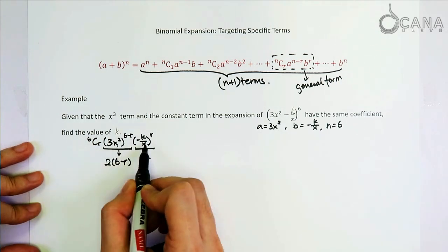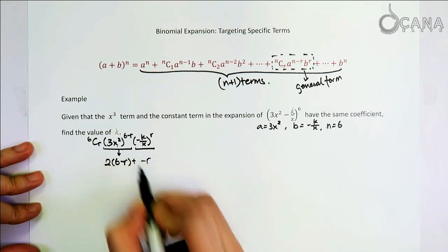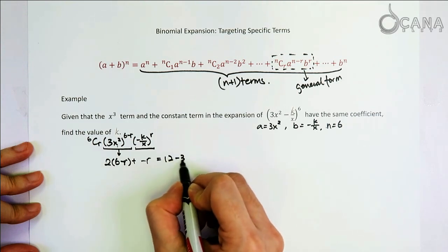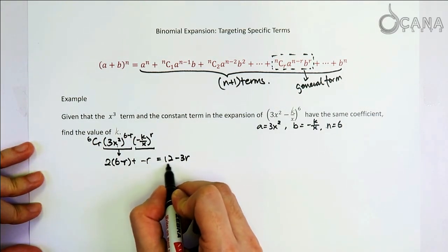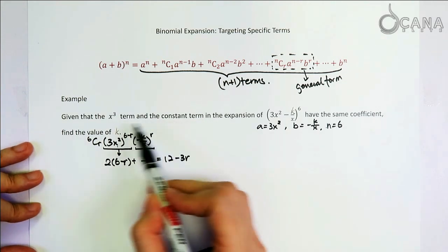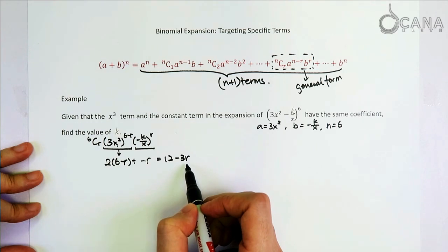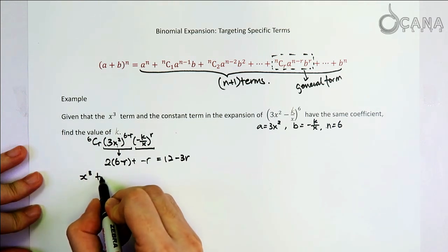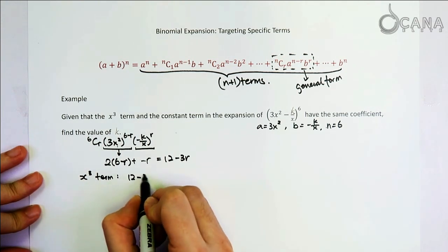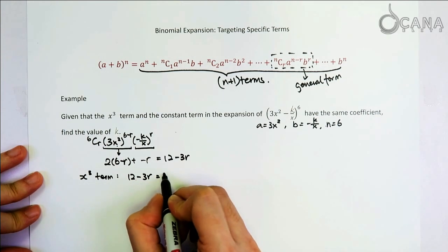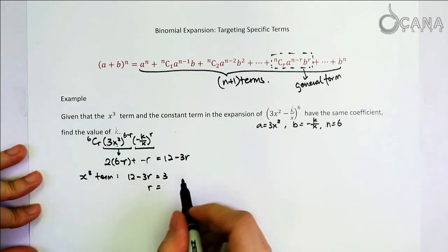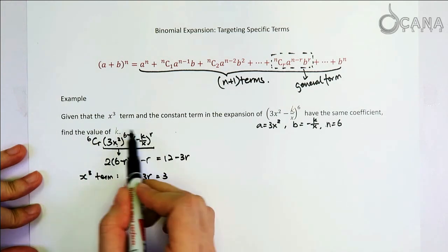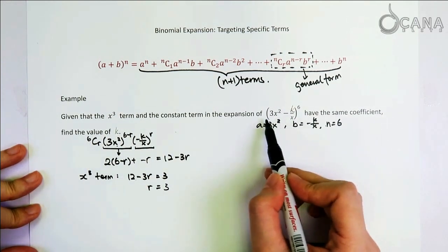So in total, when these three terms are multiplied together, the power of x should add up to 12 minus 3r. And then we just equate this to the powers of the terms that we're concerned about to see what value of r would give us the term that we want. For example, if we are looking at the x cubed term, then the power here, 12 minus 3r should equal to 3. And that solves that r equals to 3. That means when r equals to 3, this expression here gives us the x cubed term in the expansion of this bracket.